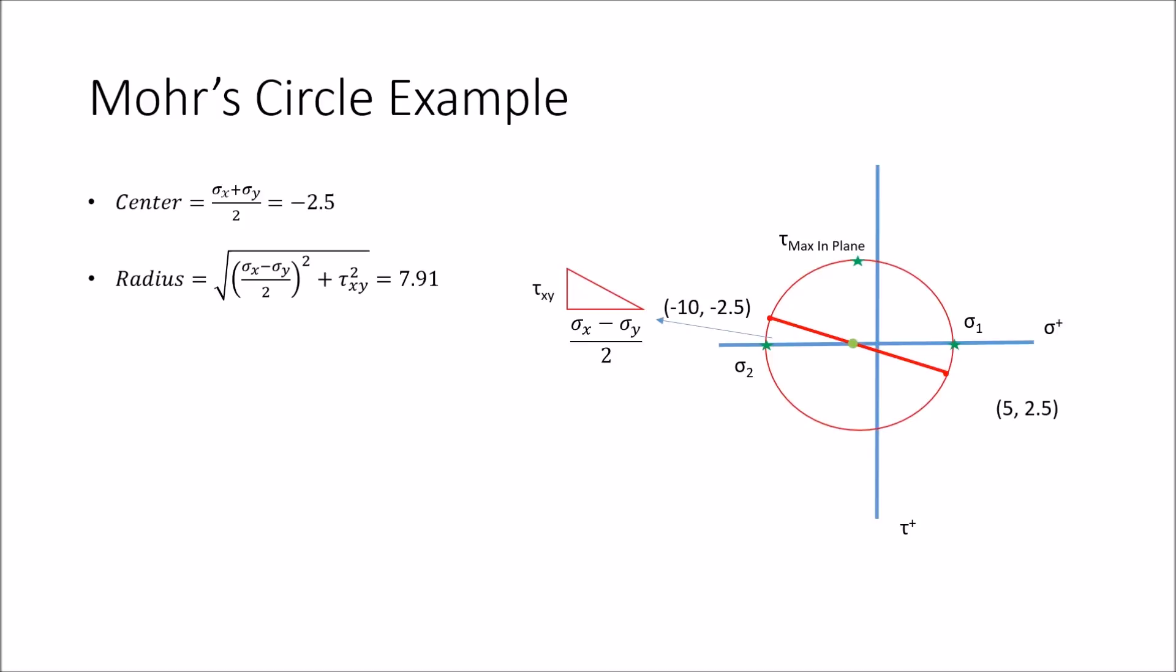After finding the radius, we will want to calculate the principal stresses, or the sigma 1 and 2 values. These come about by just adding and subtracting the radius and the center together. These are the values that would appear on the x and y faces of stress.